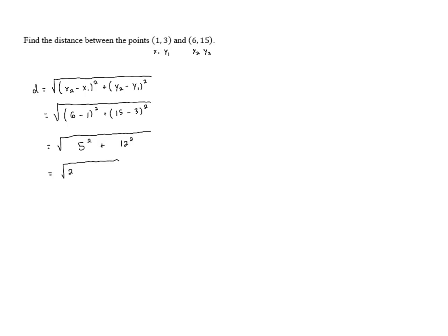5 squared is 25, 12 squared is 144. We can add those together. That gives us 169.